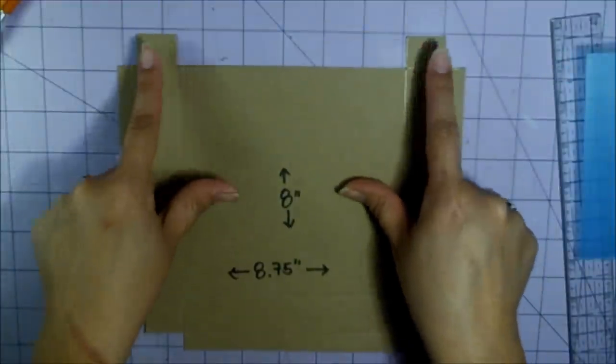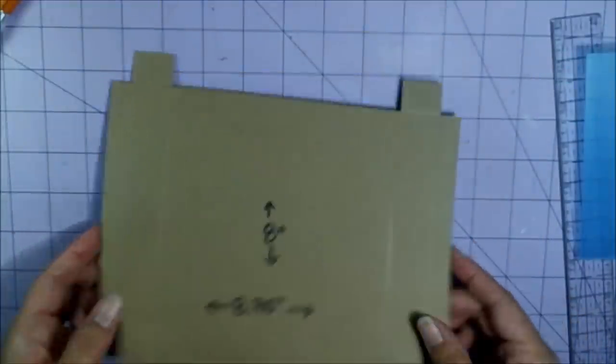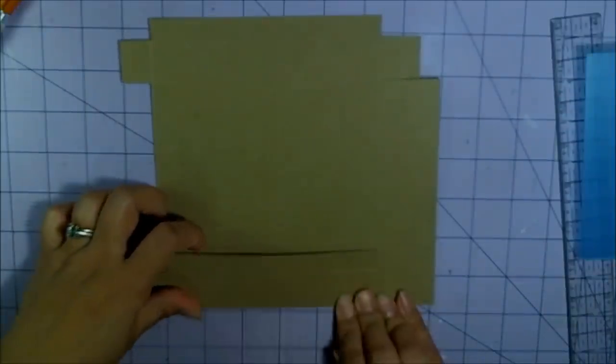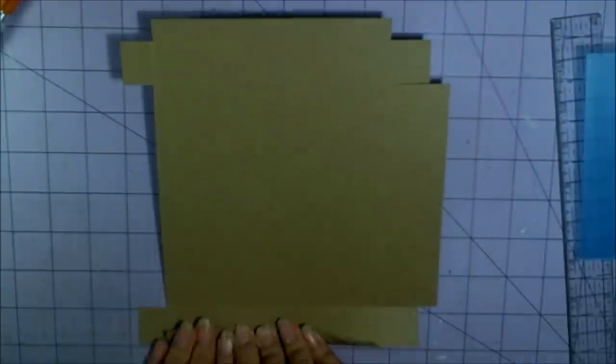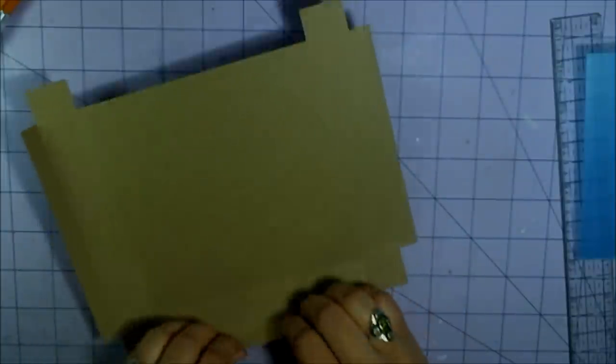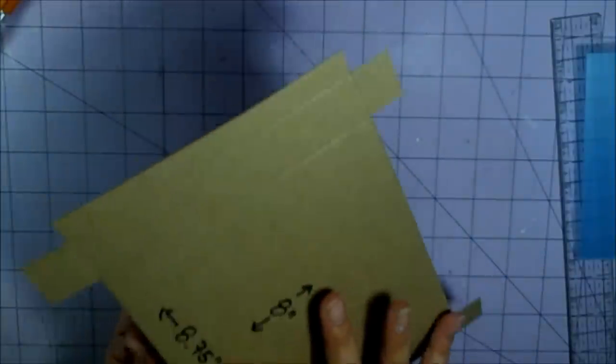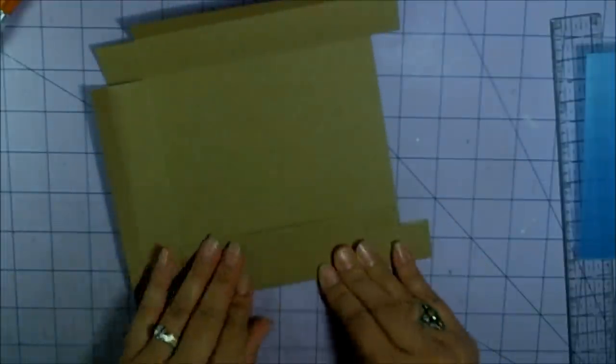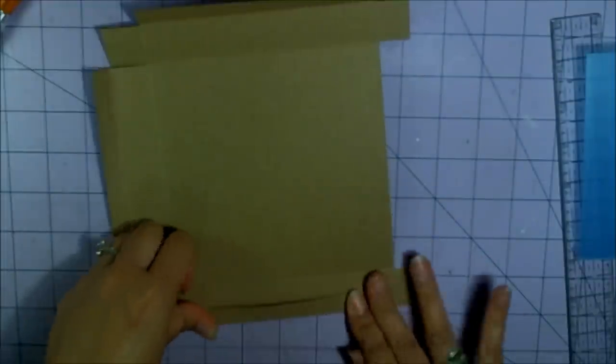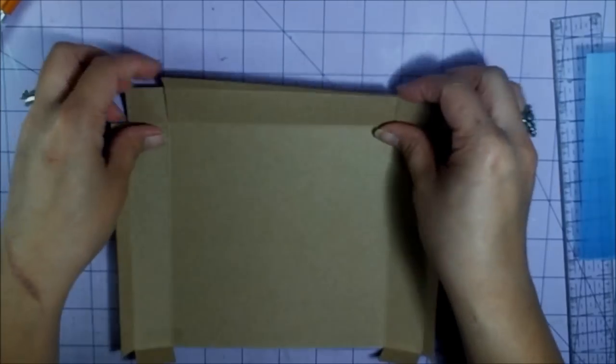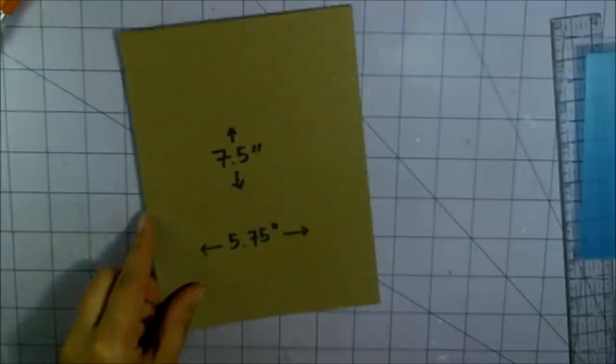This piece should look like this - it's got the stair stepper things with the tabs here and there, and then it's got these two tabs up here. And then just fold everything.